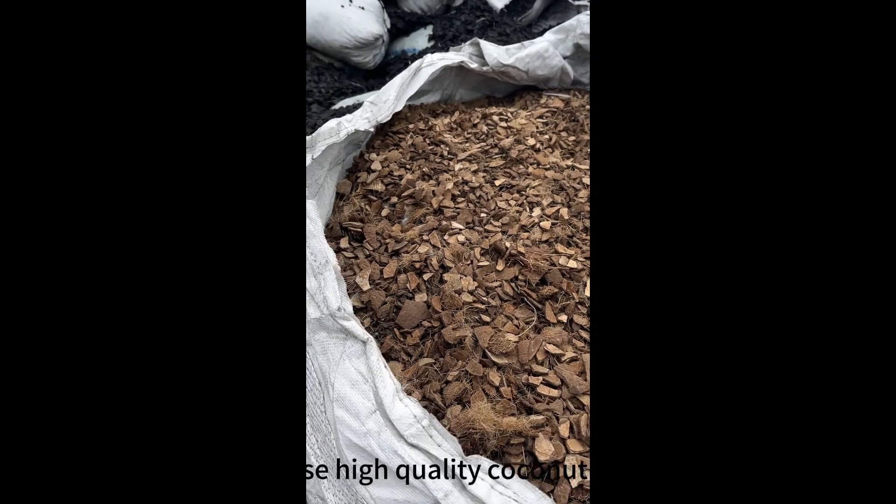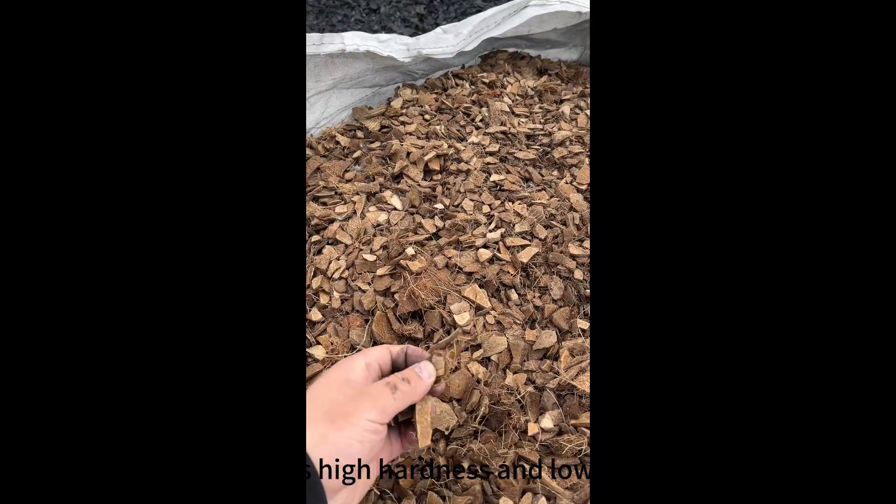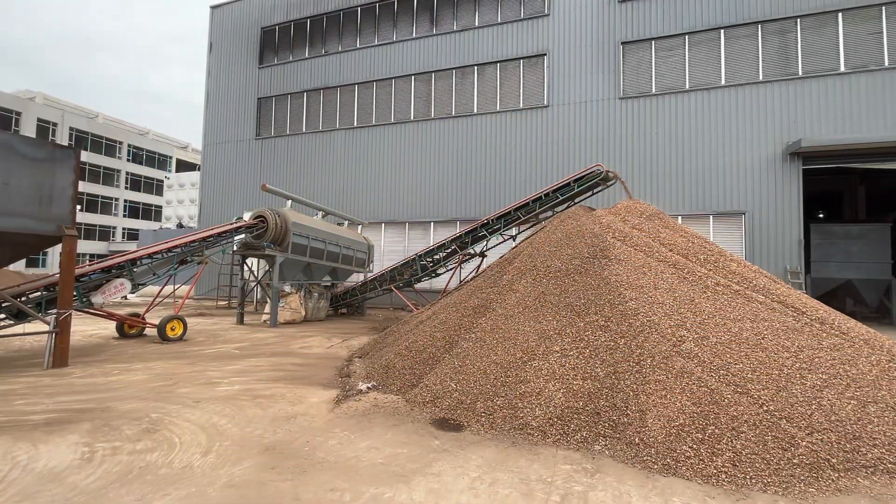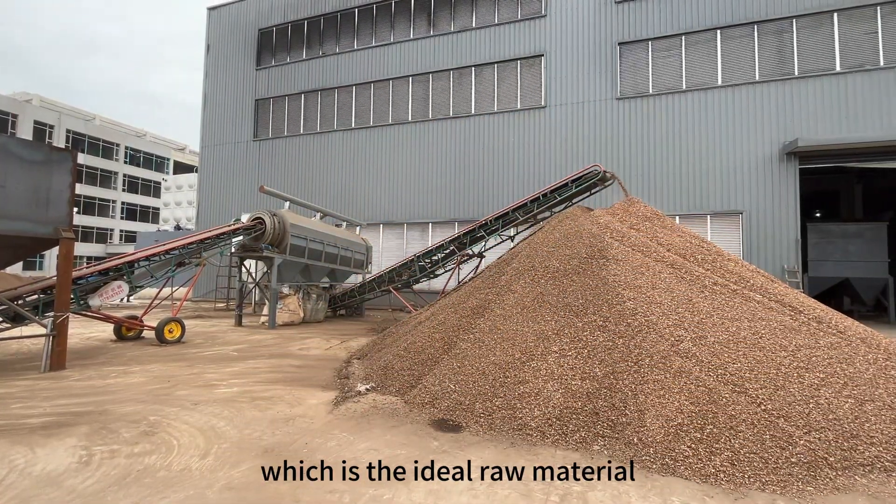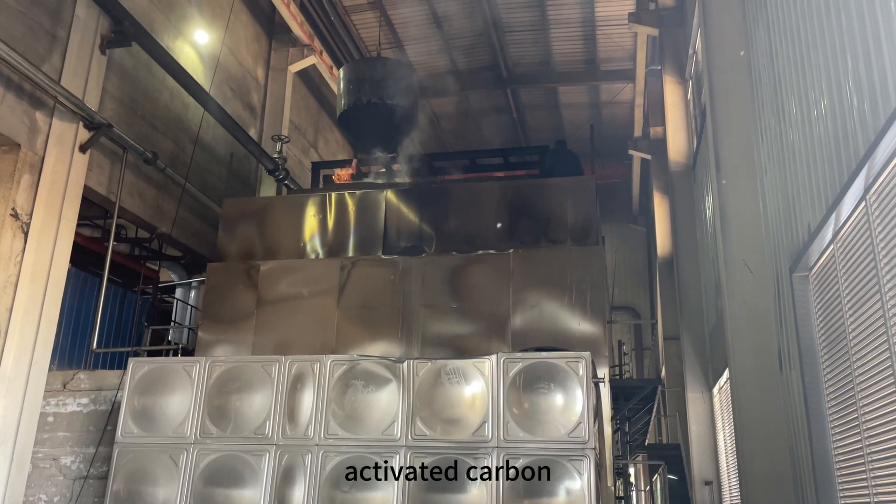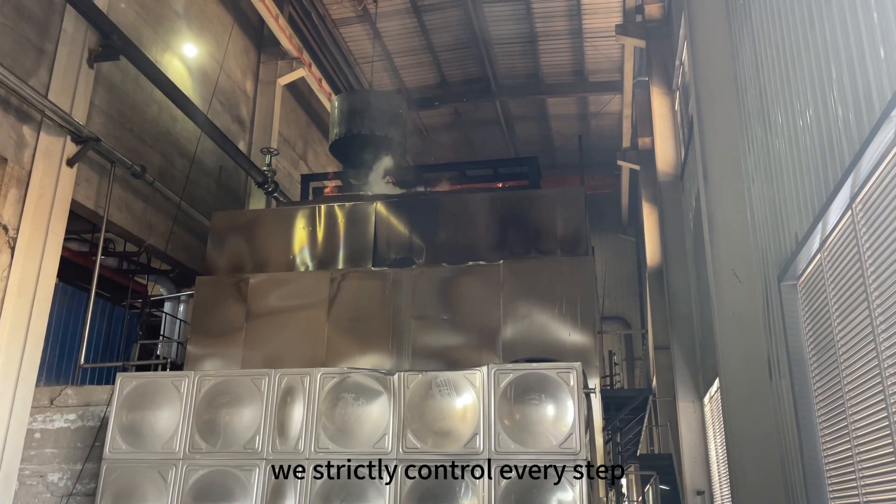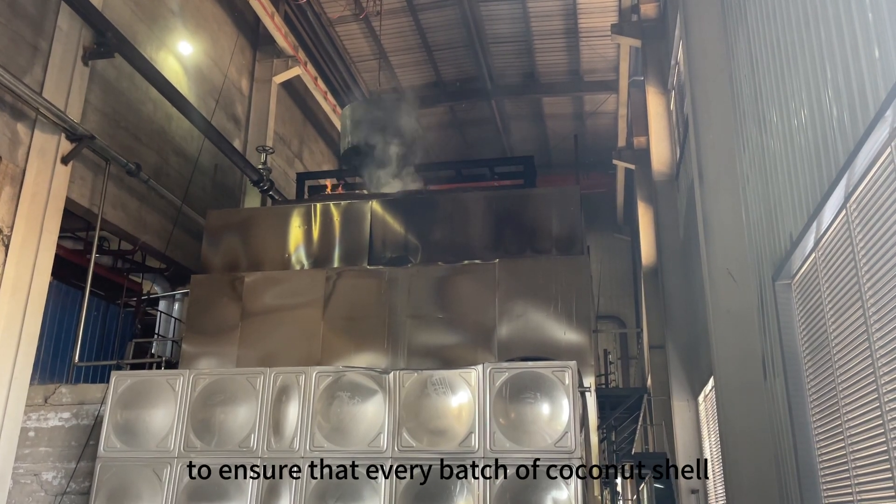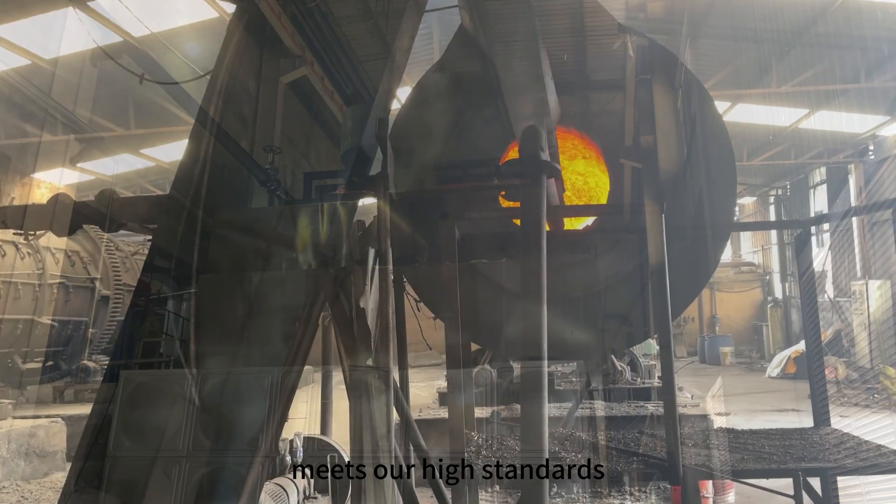We use high-quality coconut shell, known for its high hardness and low ash content, which is the ideal raw material for the production of high-performance activated carbon. We strictly control every step to ensure that every batch of coconut shell meets our high standards.